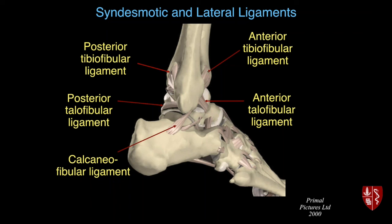This slide is a lateral view of the ankle from the Primal Pictures site, which is quite good. Keep in mind that you have the syndesmotic ligament complex that binds the tibia and the fibula together, and that has an interosseous membrane component. It also has an anterior inferior tibiofibular ligament and a posterior inferior tibiofibular ligament. Those are not really true ankle ligaments — those are the syndesmotic ligaments.